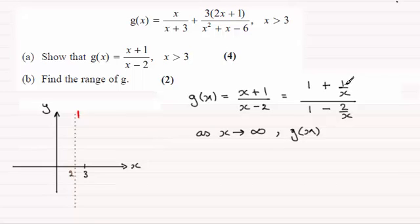If you look at it from this point of view, as x tends to infinity, what happens to g of x is that 1 over x tends to 0, so you get 1 on the top. The same argument here, 2 over a large number tends to 0, so you're just left with 1 in the denominator. 1 over 1 then tends to 1.